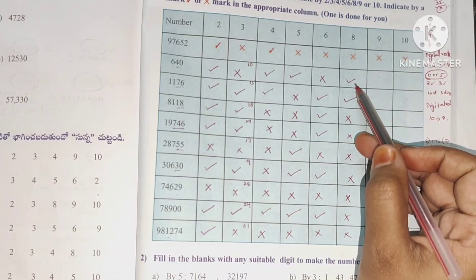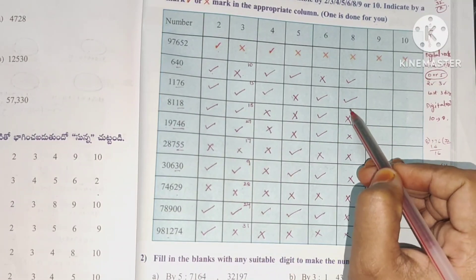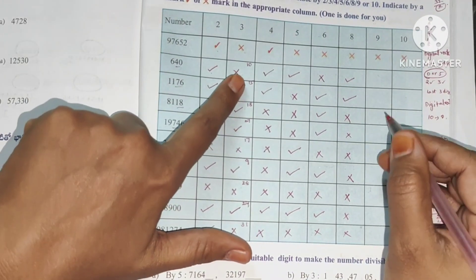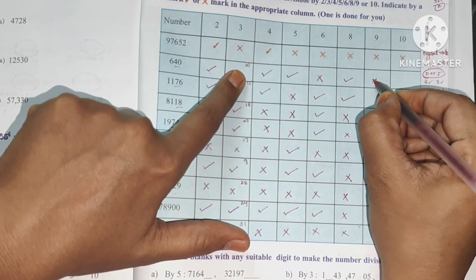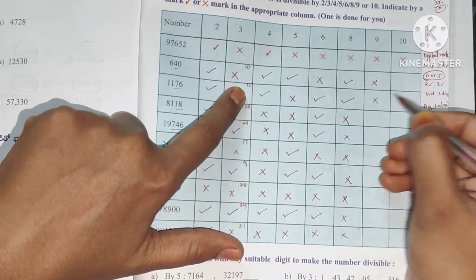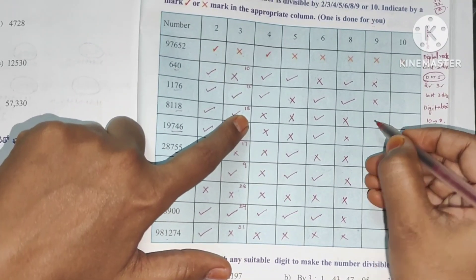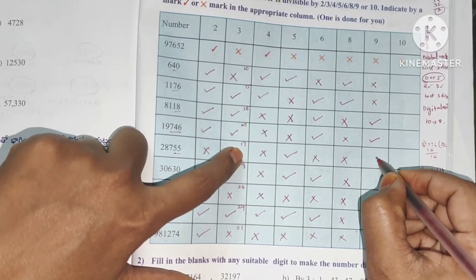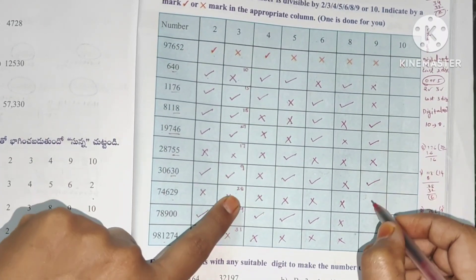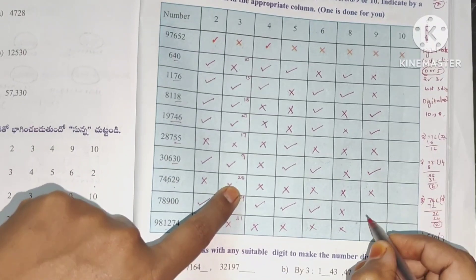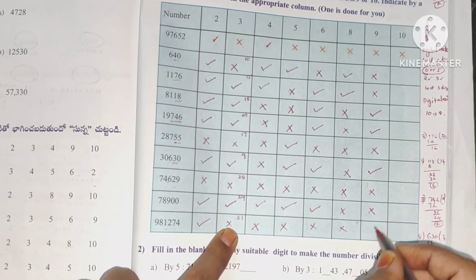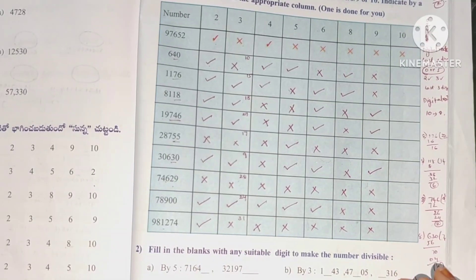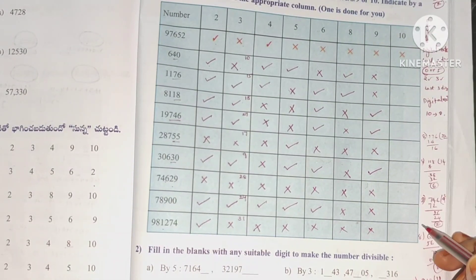For divisibility by 9, again use the digital root — sum of digits. Sum 10 — not divisible by 9. Sum 15 — not in the 9 times table, no. Sum 18 — yes, 9 times 2 is 18. Sum 27 — yes, 9 times 3 is 27. Sum 17 — no. Sum 9 — yes. Sum 28 — not in 9 table. Sum 24 — not in 9 table. Sum 31 — not in 9 table.